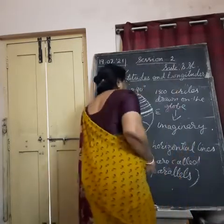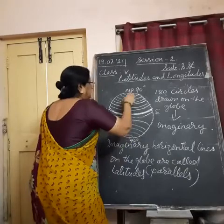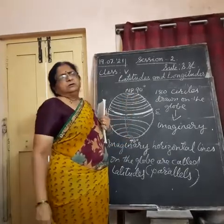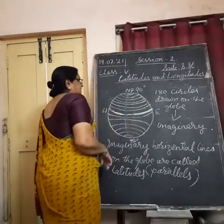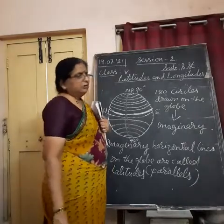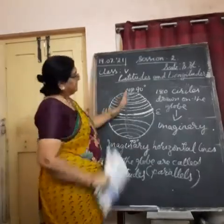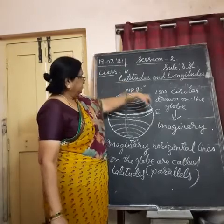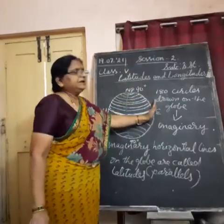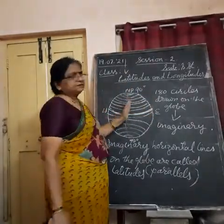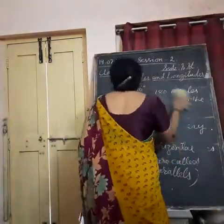Similarly, from north pole to south pole, in the center one semicircle is drawn — that is called 0 degree longitude. From there towards the west, 180 such semicircles are drawn, and from 0 degree to the east also 180 such lines are drawn, so totally they are 360 in number. I will teach you in detail when we cover longitudes.